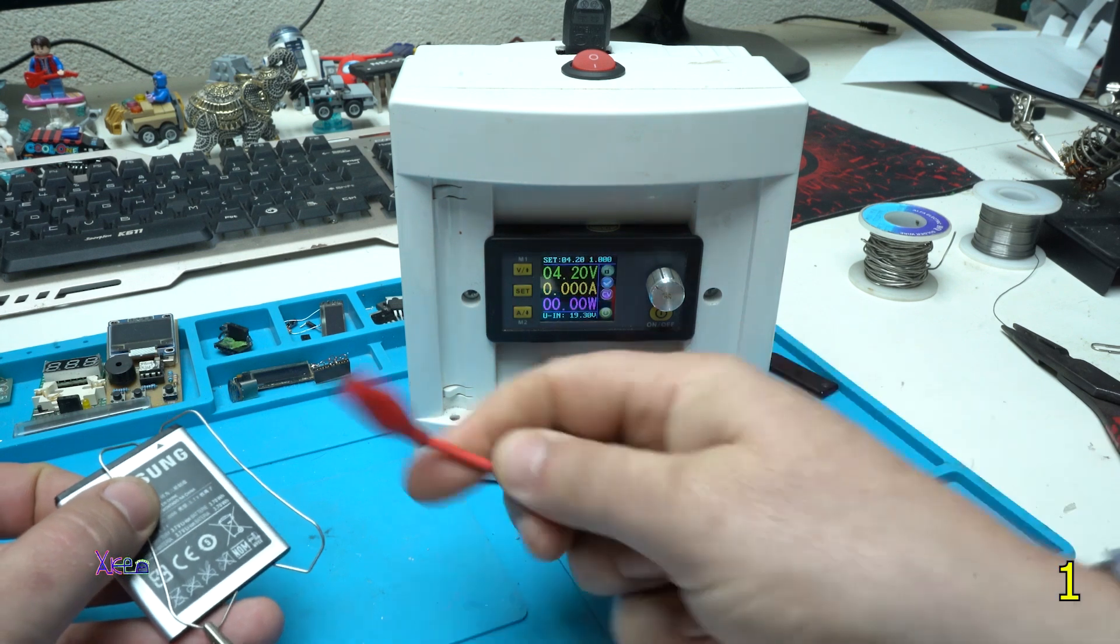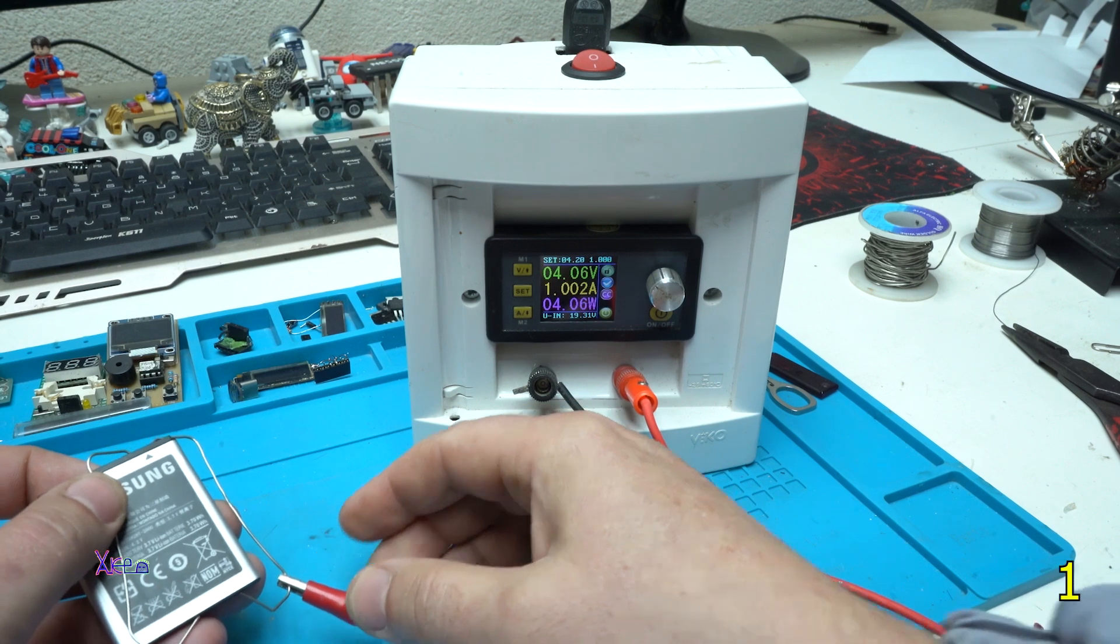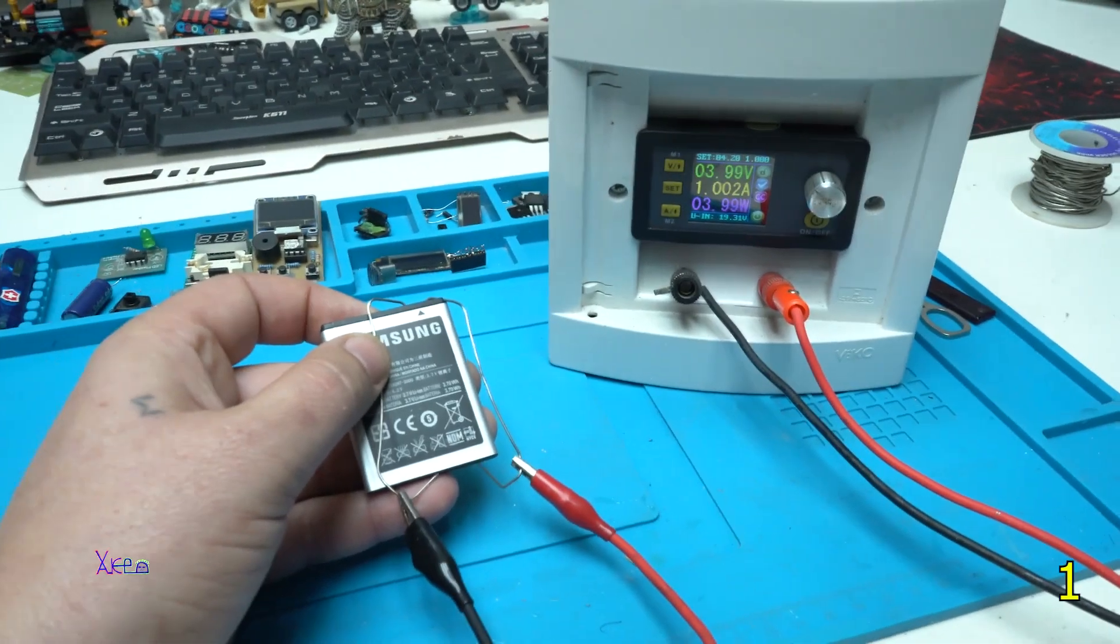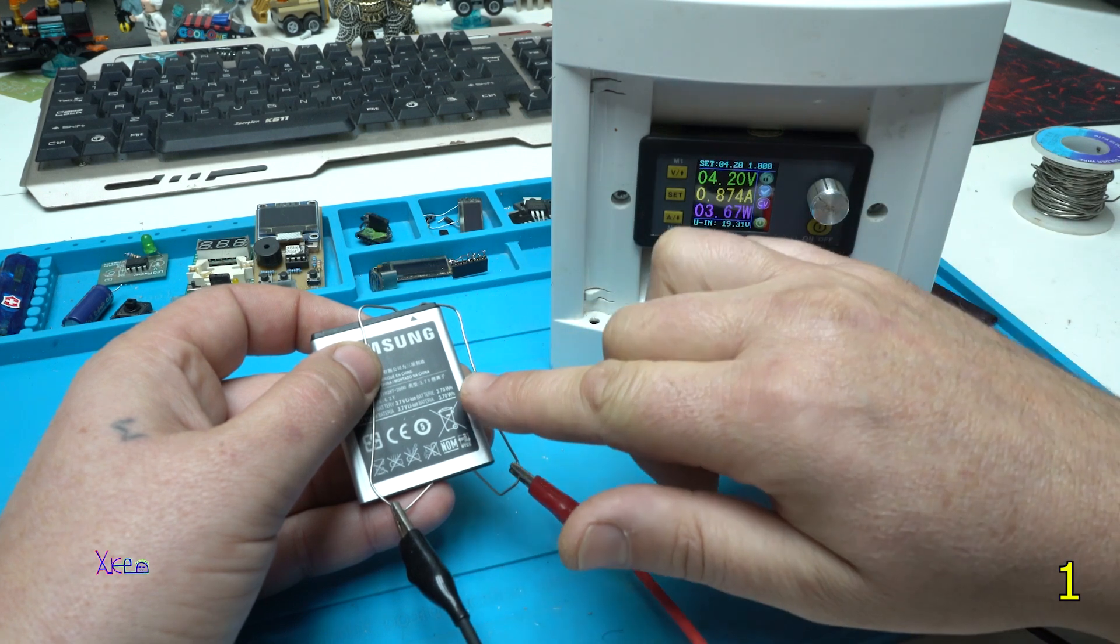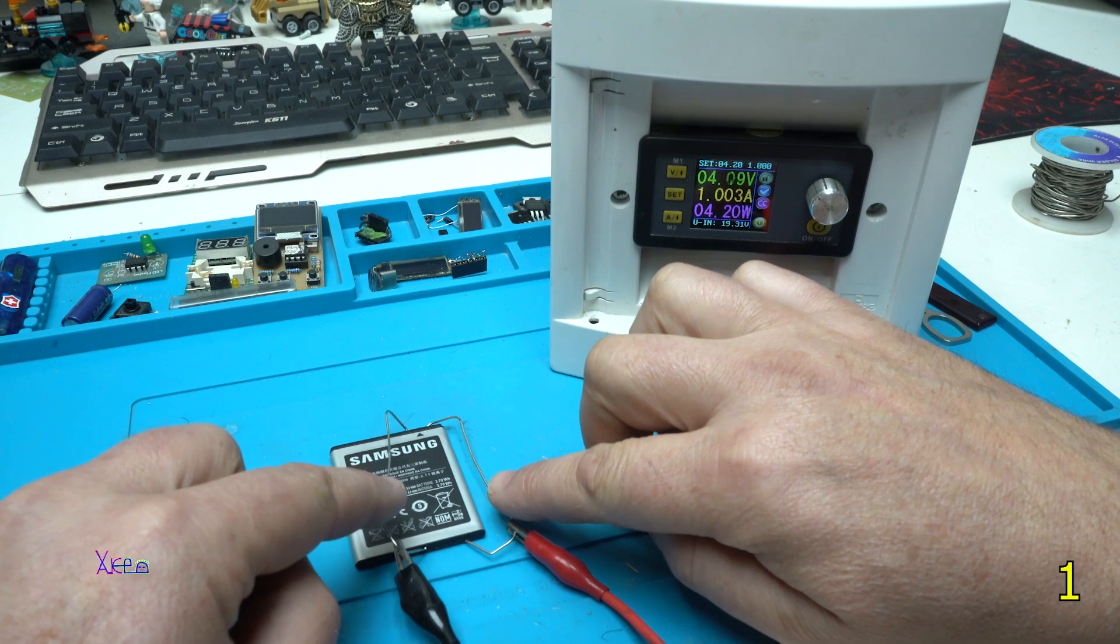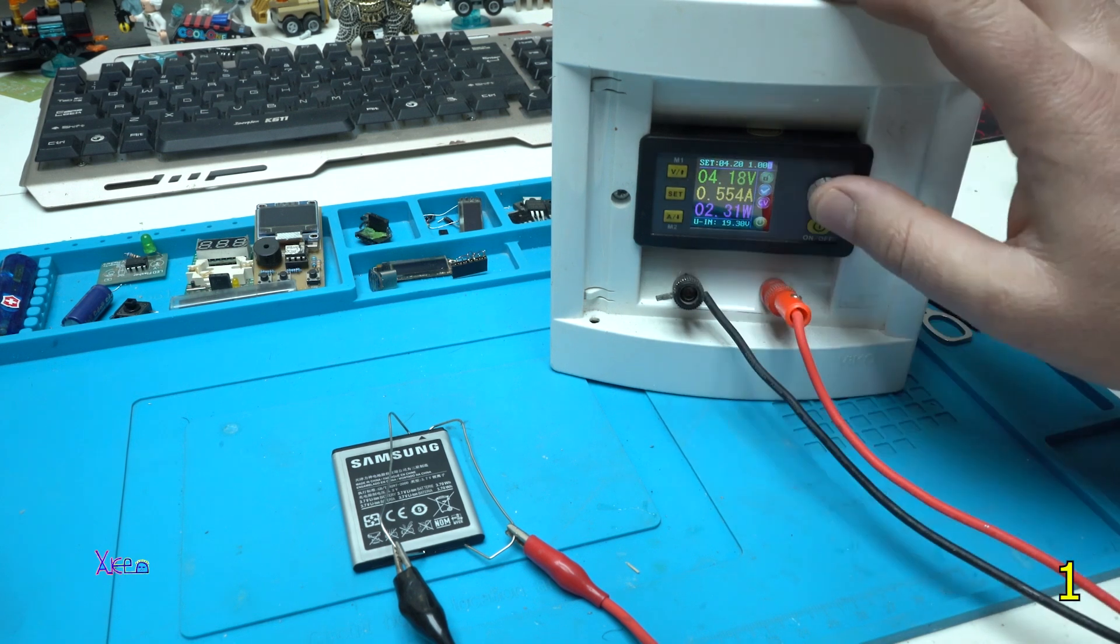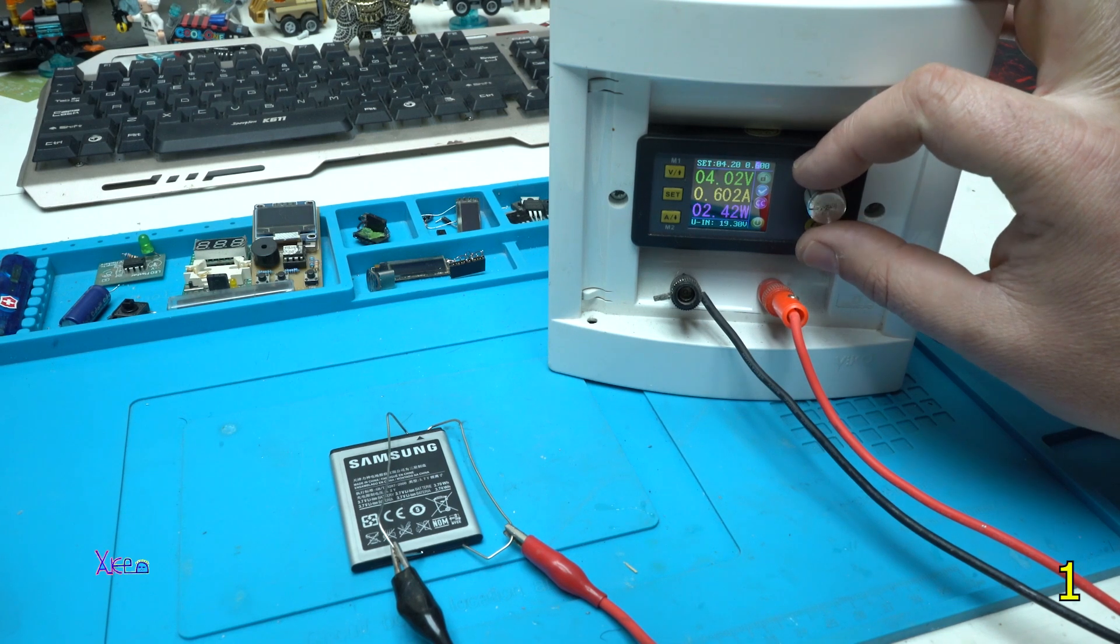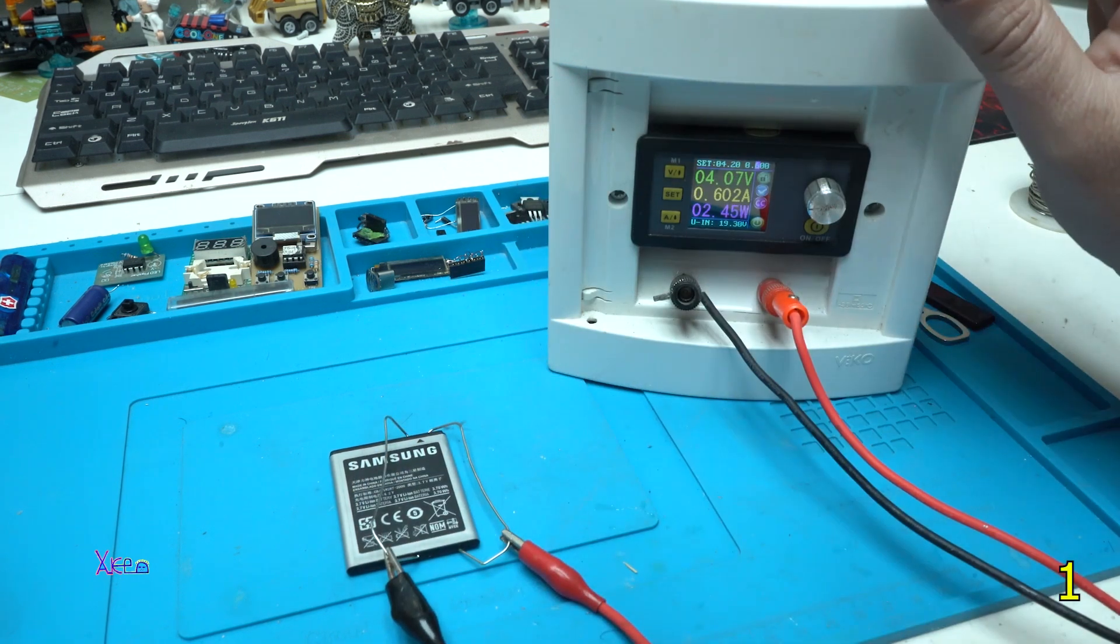...and on the positive terminal of the battery. Look, it pulls one amp of current and right now I'm charging the battery using those paper clip attachments for the battery. And I can reduce the amps because with lower amps the battery has better charging.